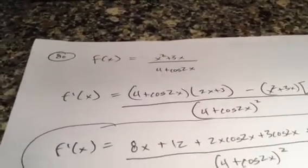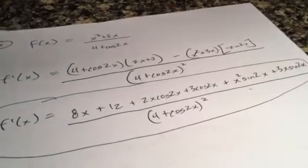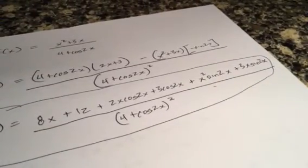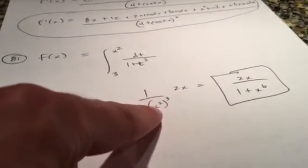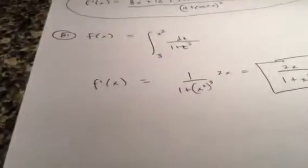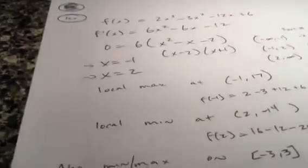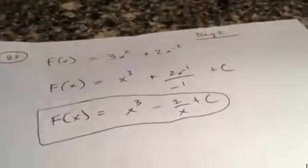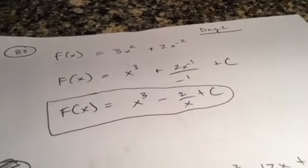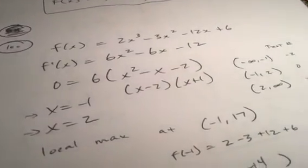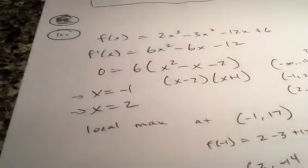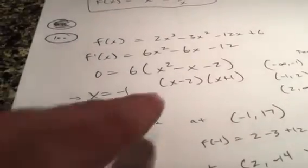Number 80: quotient rule, low d high minus high d low over low squared. A negative times a negative cancels to make it positive. For number 81, plug x squared into t for the FTC problem — cube it and take the derivative of x squared, which is 2x; it simplifies nicely. For number 80 antiderivative: find the general anti-derivative — don't forget the constant of integration. For number 100, we're finding local max, absolute min and max, and increasing/decreasing intervals: take the derivative and set it equal to zero; the critical values are negative one and two.